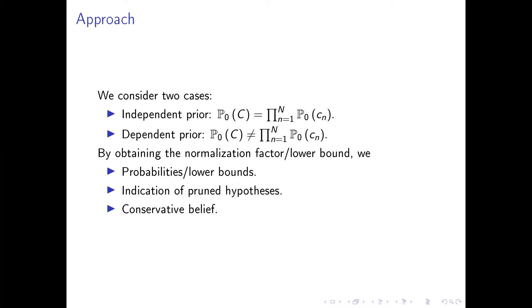In our work, we consider two cases: one where the prior of the classes is independent, and one where it is dependent. In the independent case, we show that it is possible, after some algebraic manipulation, to calculate the normalization factor very efficiently.